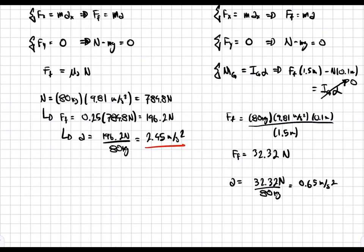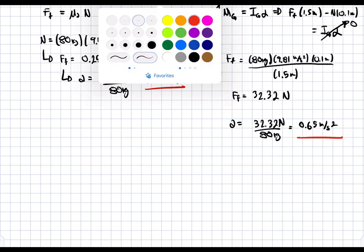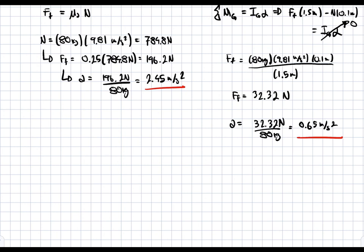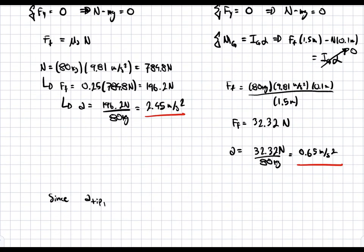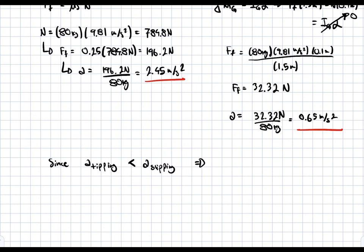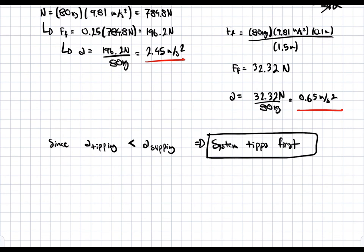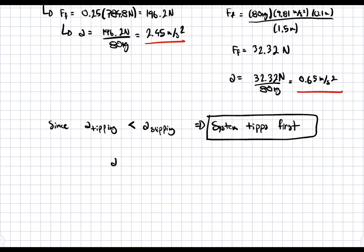The tipping acceleration of 0.65 m/s² is smaller than the slipping acceleration. Since the tipping acceleration is smaller, it will occur first — the system will tip before it slips. The magnitude of the critical acceleration is 0.65 m/s².